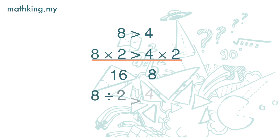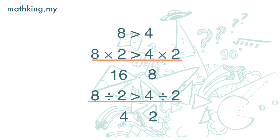If I divide both the left-hand side and right-hand side by 2, the left-hand side is 4 and the right-hand side is 2. So 8 divided by 2 is greater than 4 divided by 2 — this still holds true.